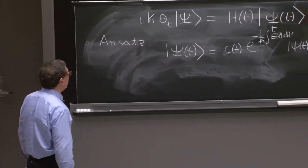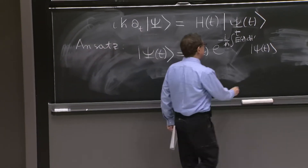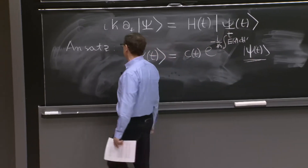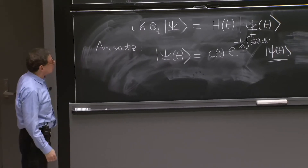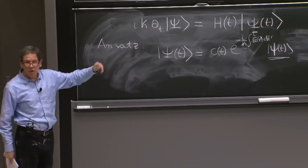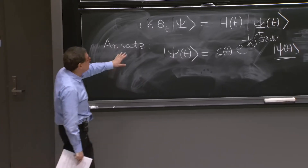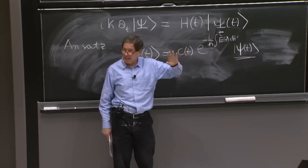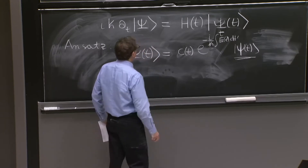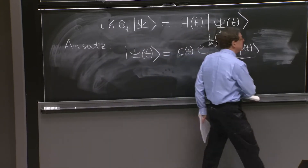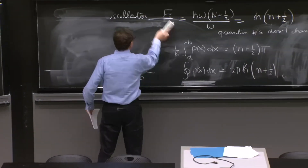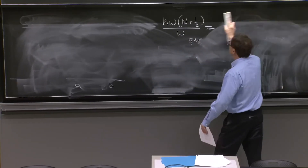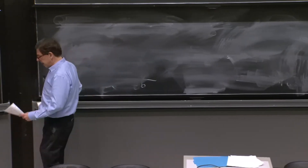Our idea is: we're given those instantaneous eigenstates, and let's use them to get a solution of the Schrödinger equation. Of course, if we found that this is a solution, we would have found that with some modification the instantaneous eigenstates produce solutions. That would be very nice. We will find, essentially, that that's true in the adiabatic approximation. So let's do this calculation, which is important, and gives us our first sight of the adiabatic result.